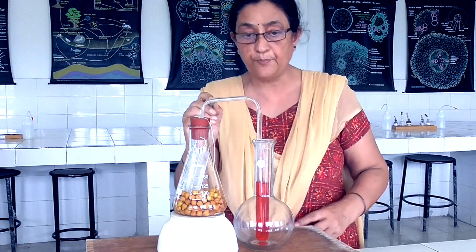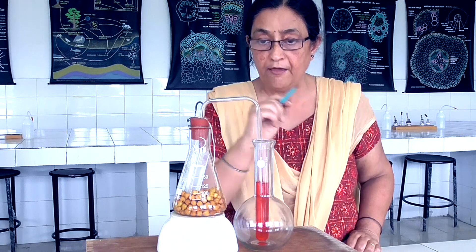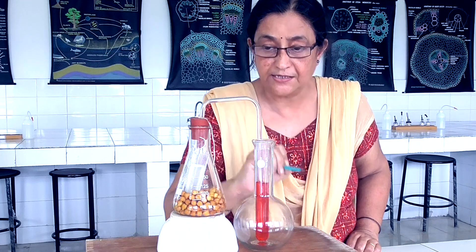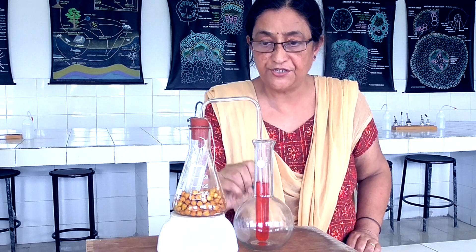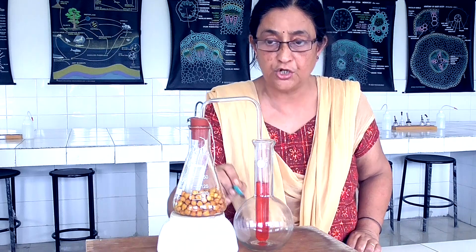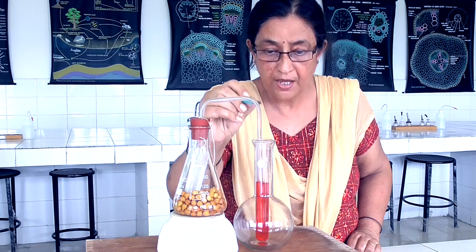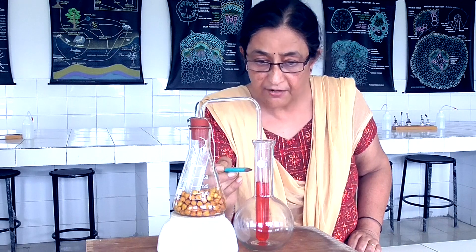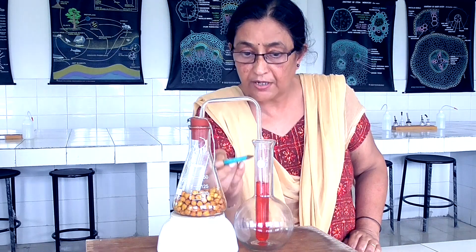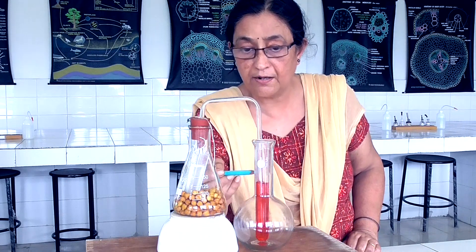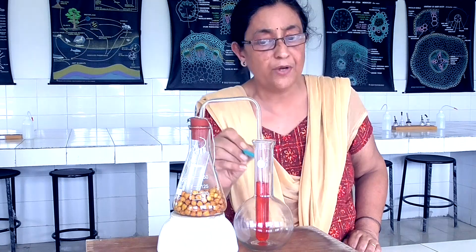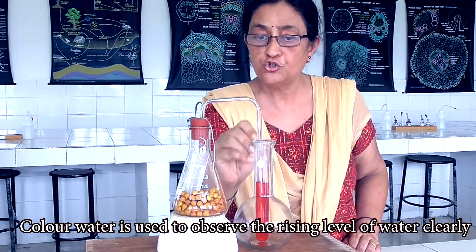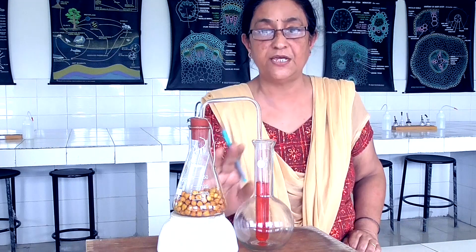Now we are going to start with the procedure, observation, and conclusion. You have seen these are the germinating seeds; you can see the potassium hydroxide solution. Now this is the delivery tube which is dipped into colored water. Why do we take colored water? So that we can easily observe the level of water in the delivery tube — if it is not colored, it becomes difficult to see. You can color it with ink or safranin dye.